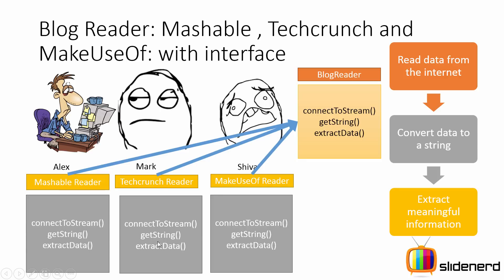When they write code, all of them have to keep the same method names and follow the contract specified by the interface. The only difference between these methods is that they work with different websites. For example, the connectToStream method of the Mashable Reader will work with mashable.com, but connectToStream of the TechCrunch Reader will work with techcrunch.com. This is how interfaces can be used to make things standard when working with several people.